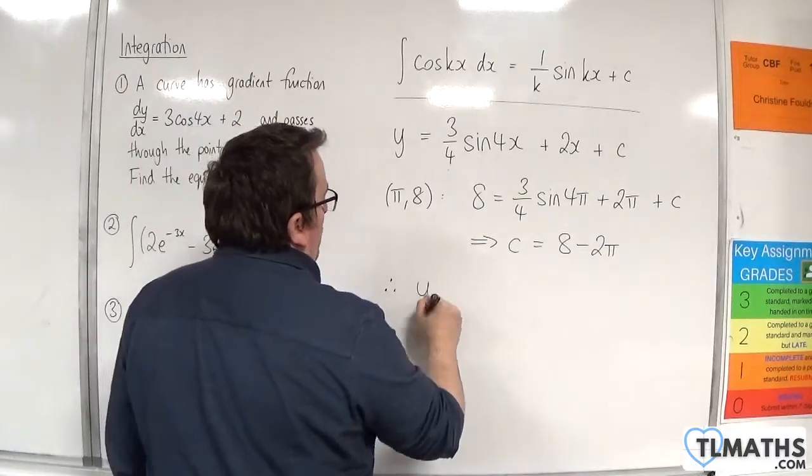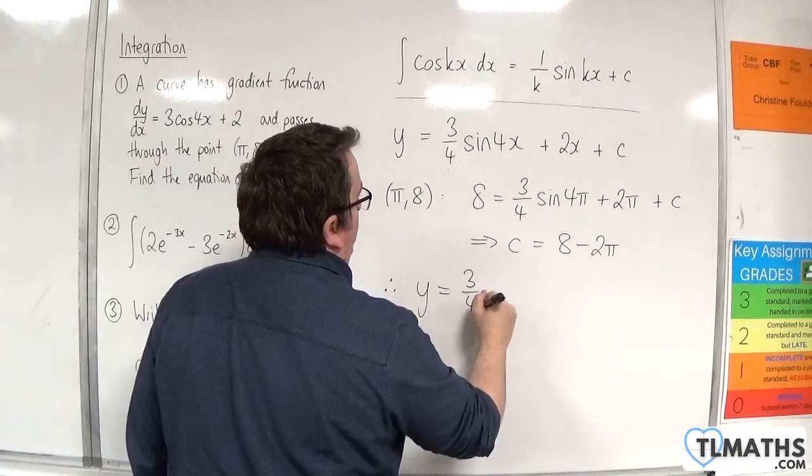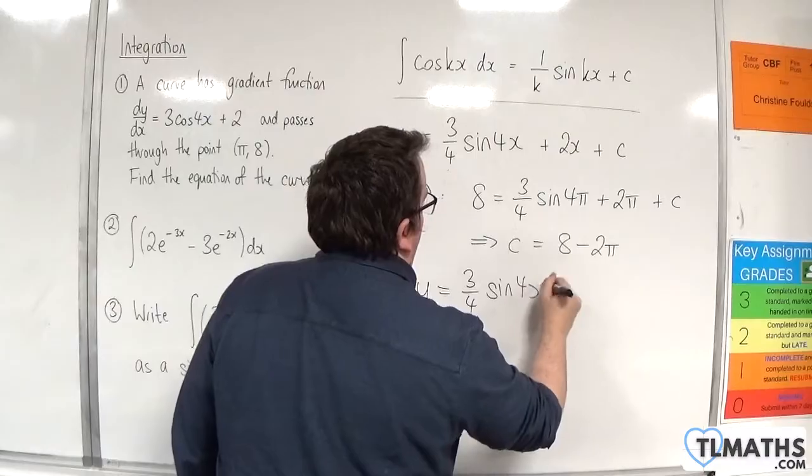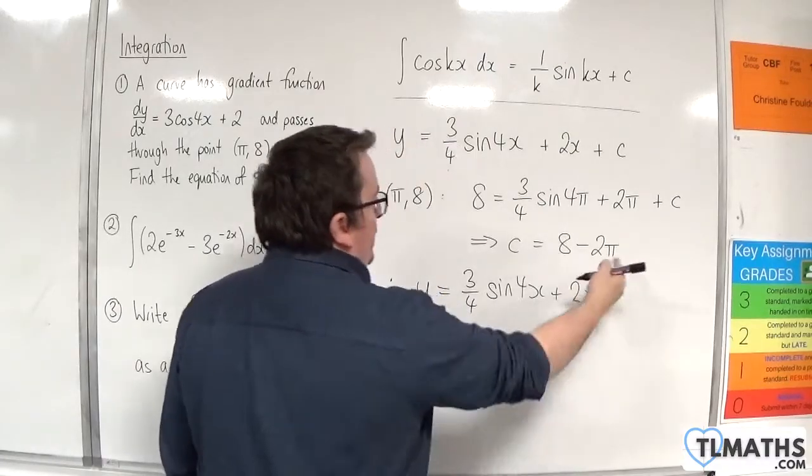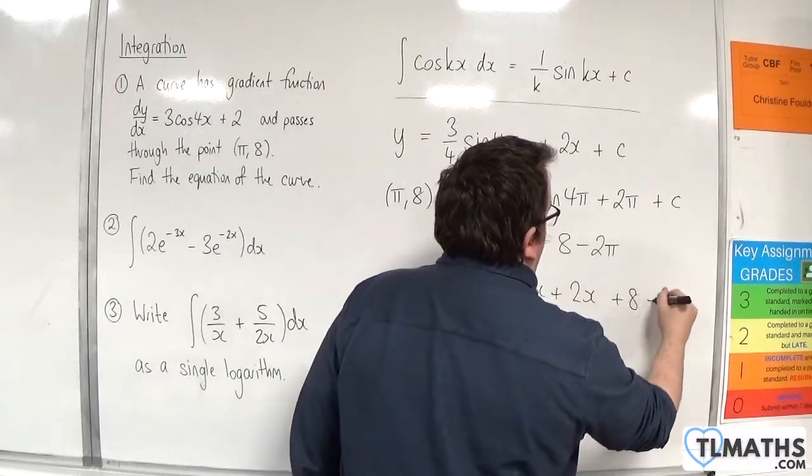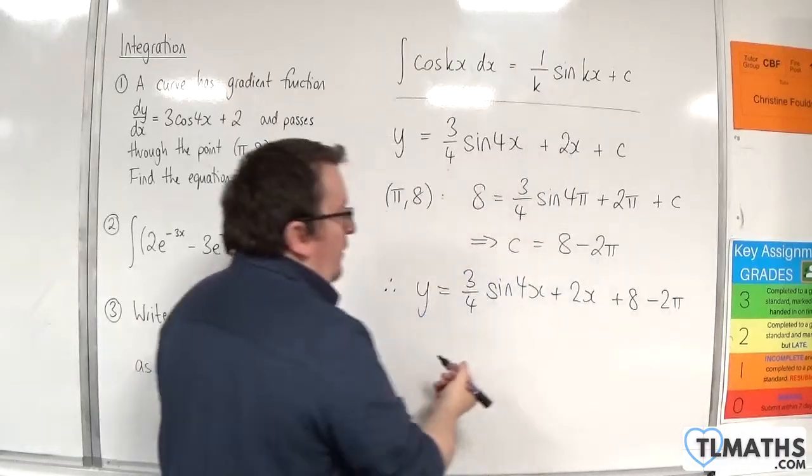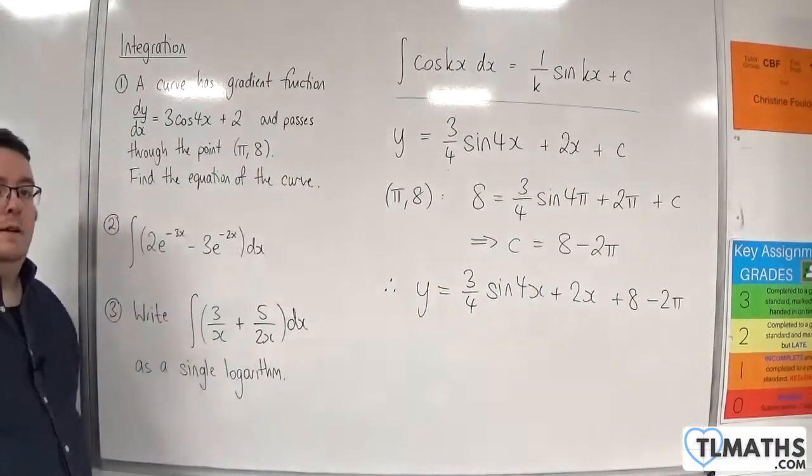Therefore, y is equal to 3 quarters sine of 4x plus 2x plus our constant of integration, 8 take away 2 pi. And that is the particular solution I'm looking for, for question number 1.